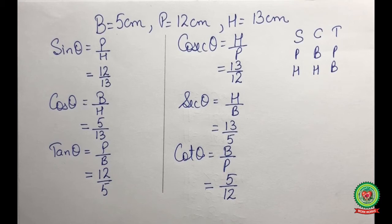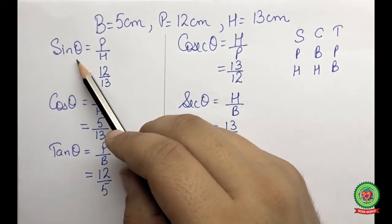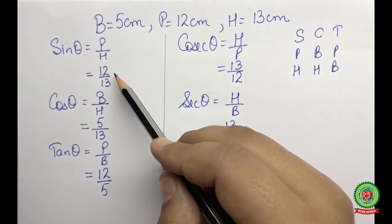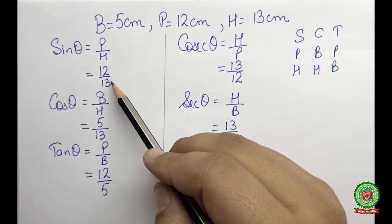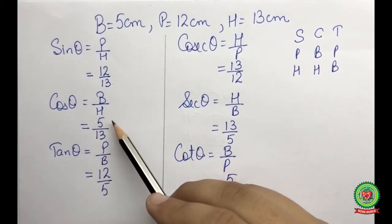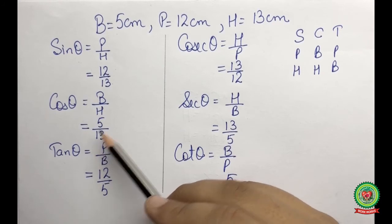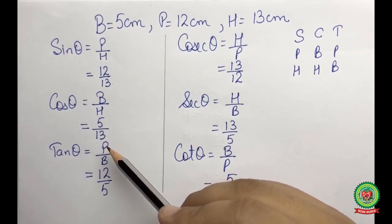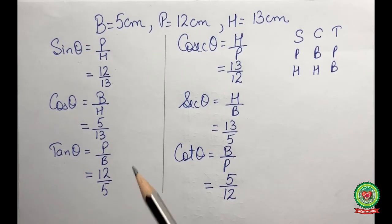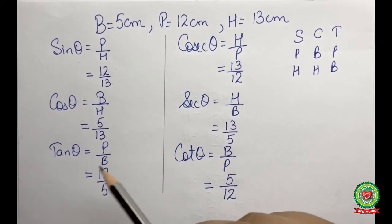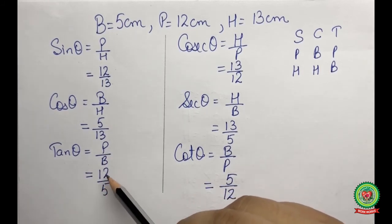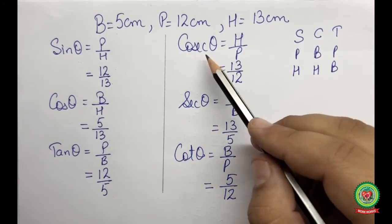The first trig ratio, sin theta = p/h = 12/13. The second, cos theta = b/h = 5/13. Students, remember that sine theta and cos theta are the simplest ratios of trigonometry — the simplest and smallest trig ratios. The third trig ratio, tan theta = p/b = 12/5.